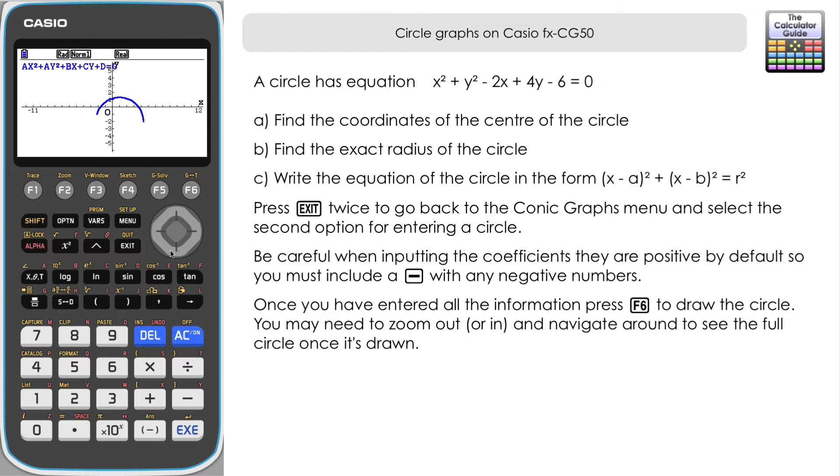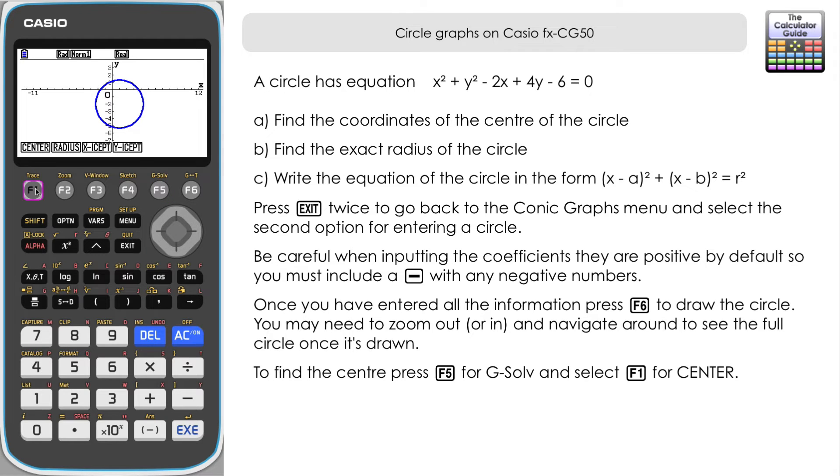It's a little bit below the axis there. So I'm just going to scroll down and you can see our circle is drawn here. Now if we want to find the centre, then what we can do is to press F5 for G solve and then press centre. And those of you in the UK might notice that this is spelt with US English centre being T-E-R rather than T-R-E. But it's still going to find the centre of the circle for us here. And we've got it at coordinates x of 1 and y of minus 2. So it's 1 minus 2 we've got as the centre of the circle.